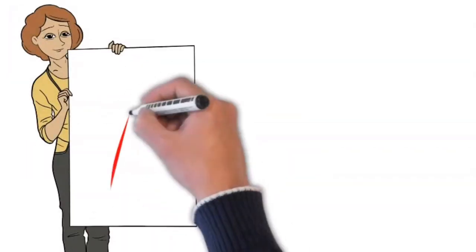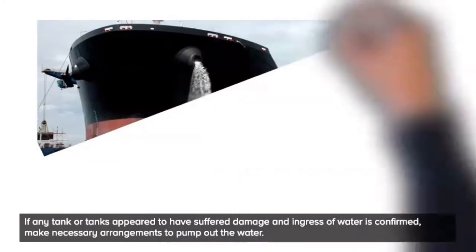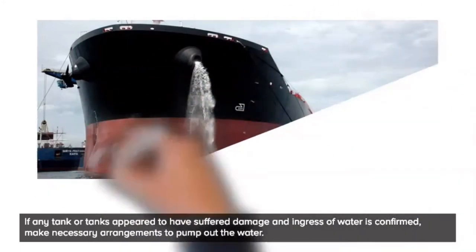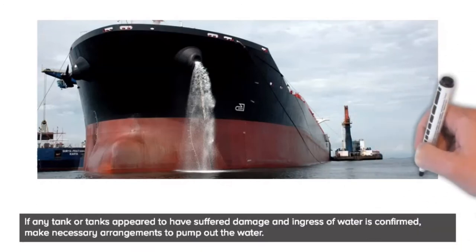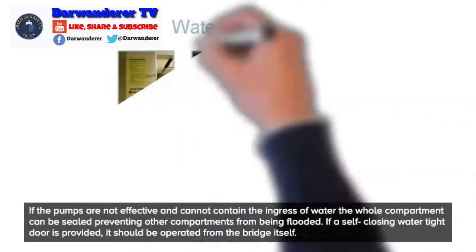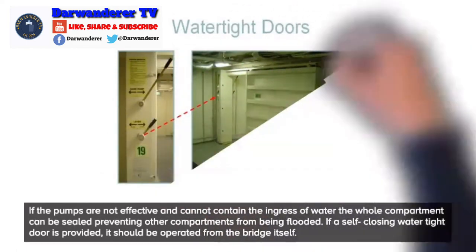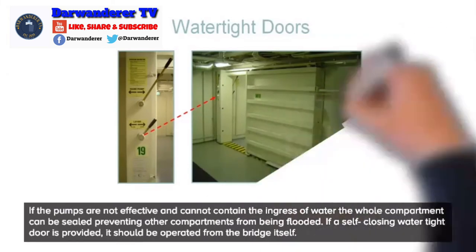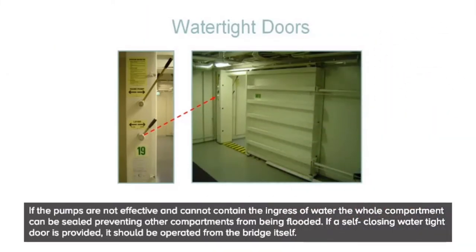7. Take immediate action in case of damage. If any tank or tanks appeared to have suffered damage and ingress of water is confirmed, make necessary arrangements to pump out the water. If the pumps are not effective and cannot contain the ingress of water, the whole compartment can be sealed preventing other compartments from being flooded. If a self-closing watertight door is provided, it should be operated from the bridge itself.